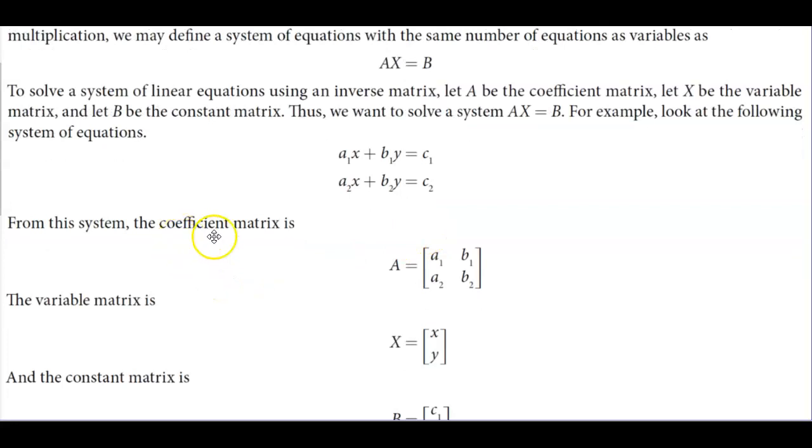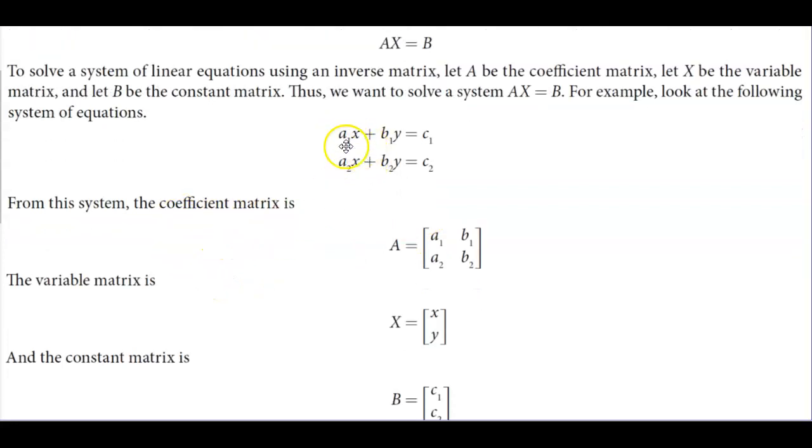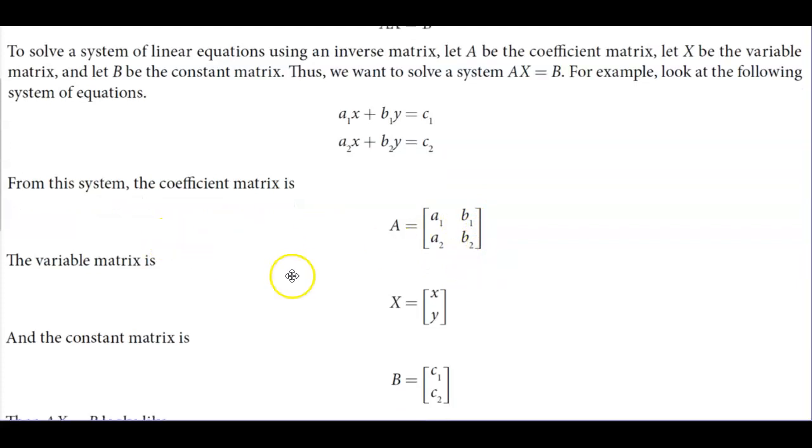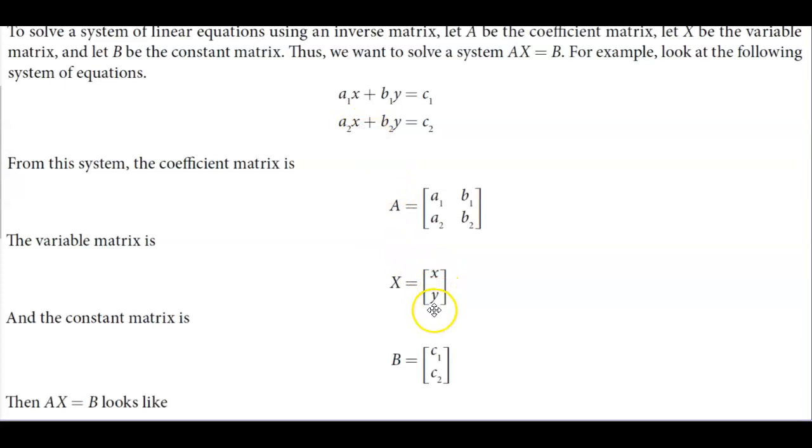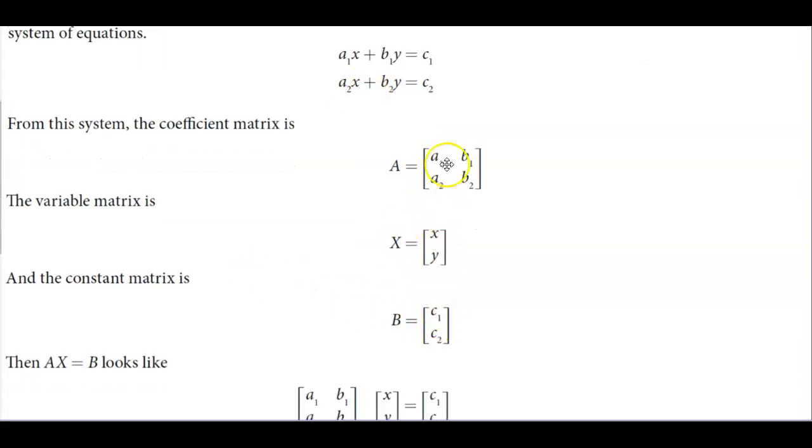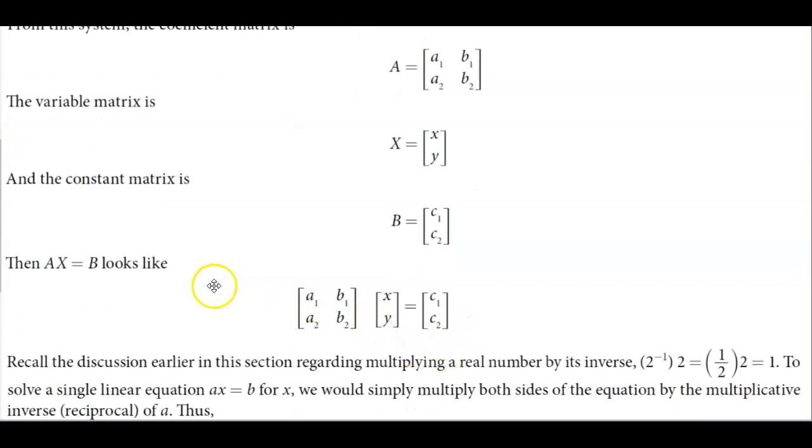Now, for this system, the coefficient matrix is the coefficients of the variables. So, A is going to equal A subscript 1, A subscript 2, B subscript 1, and B subscript 2. The variable matrix is going to be X and Y, and the constant matrix is going to be C1, C2. So, A times X equals B. This is the coefficient matrix times the variable matrix, which is equal to the constant matrix.